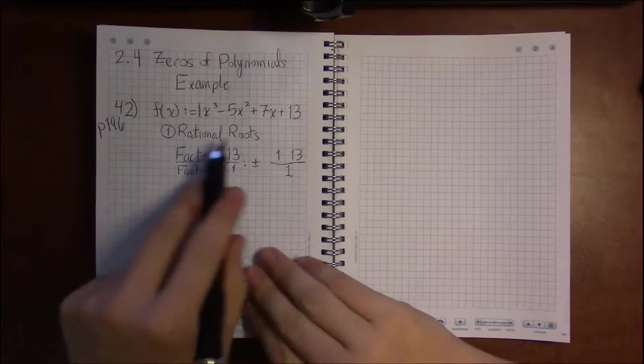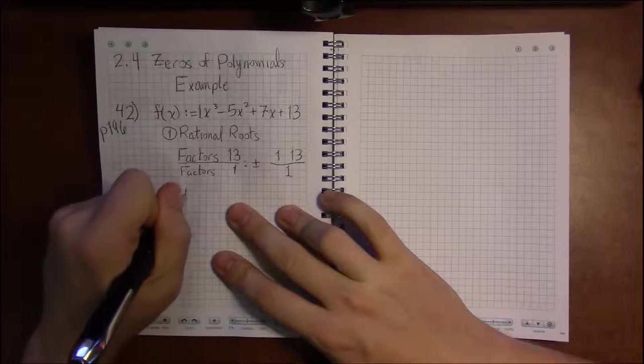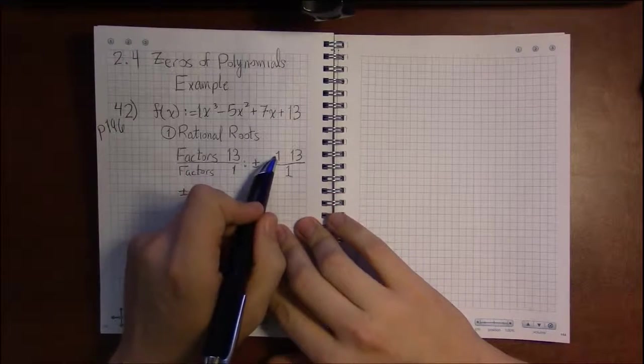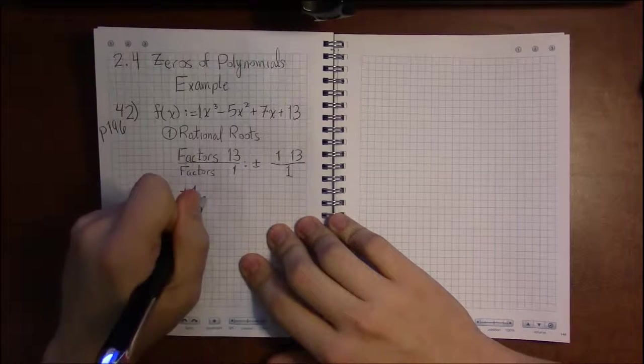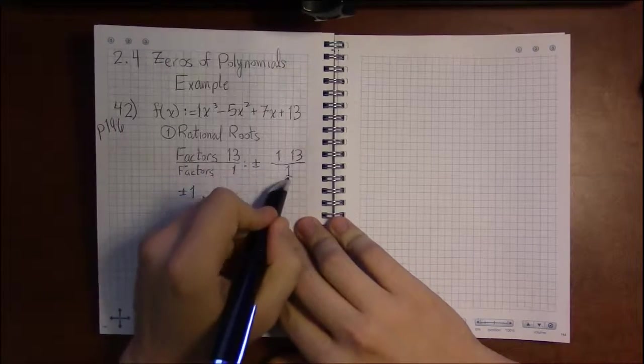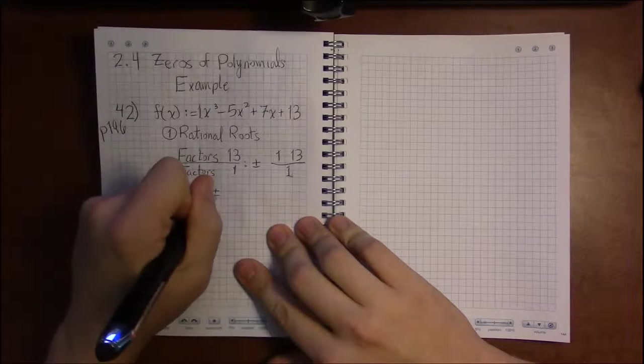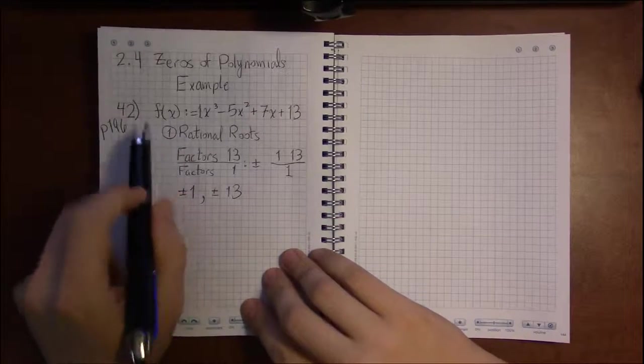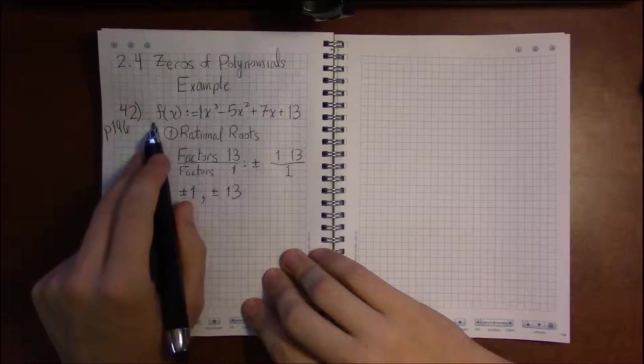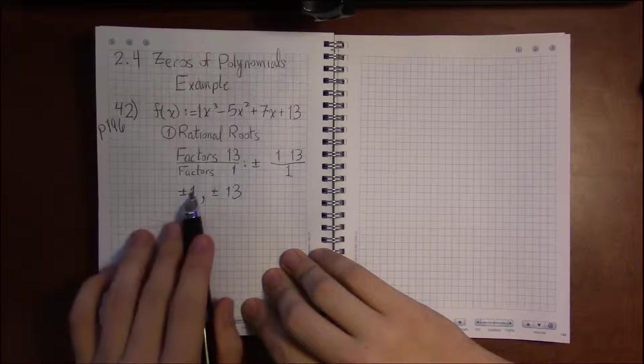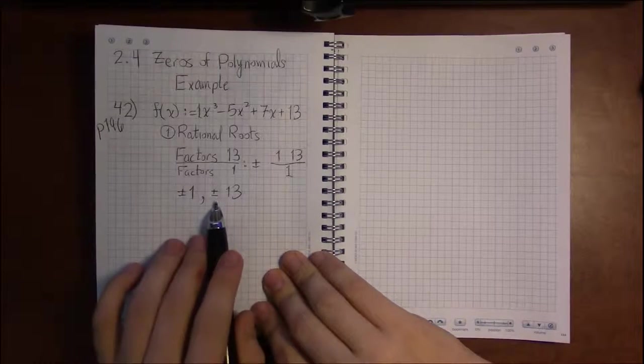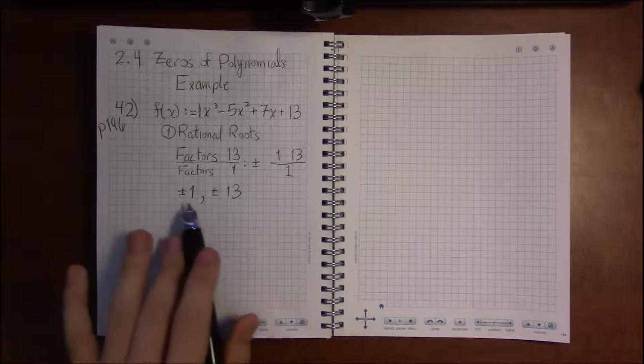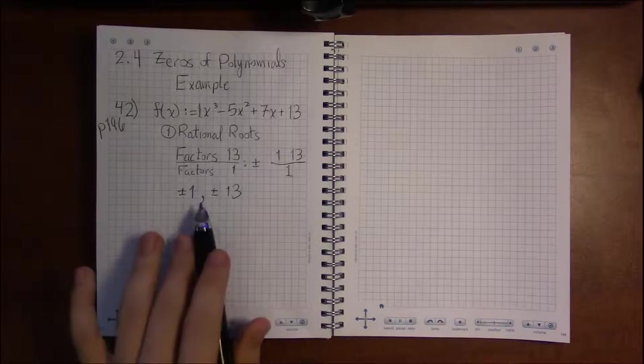Which means if this polynomial has any rational roots, they are among the following: 1 over 1 is just 1, 13 over 1 is just 13. If this polynomial has any nice roots, they are either plus 1, minus 1, plus 13, or minus 13.